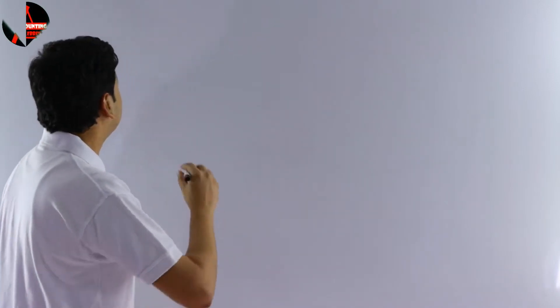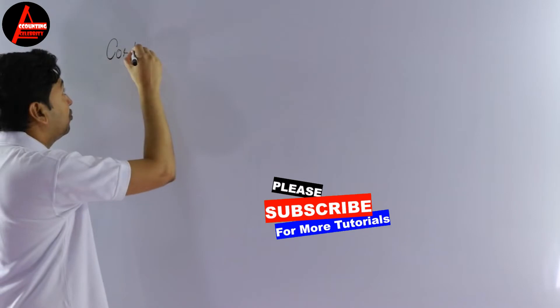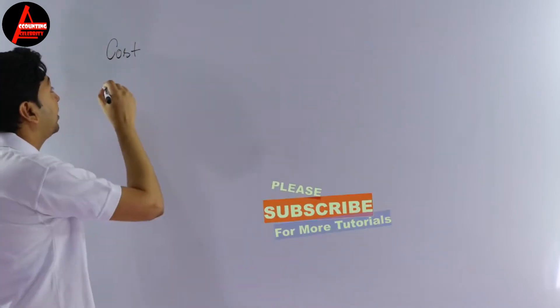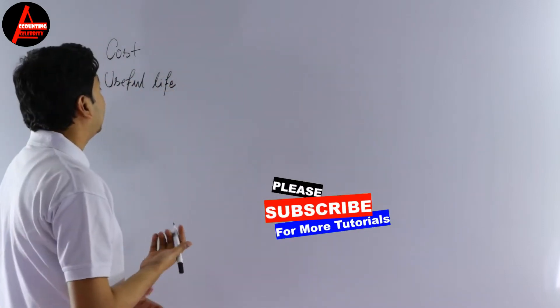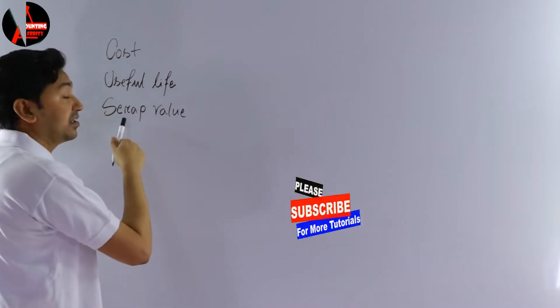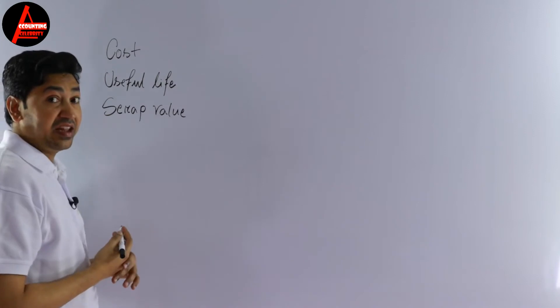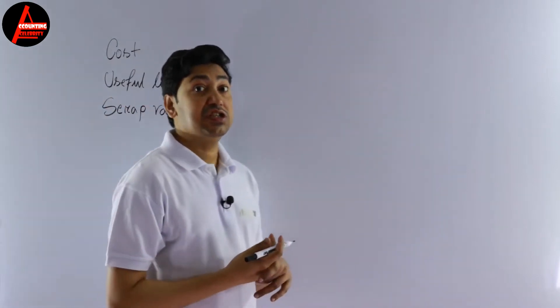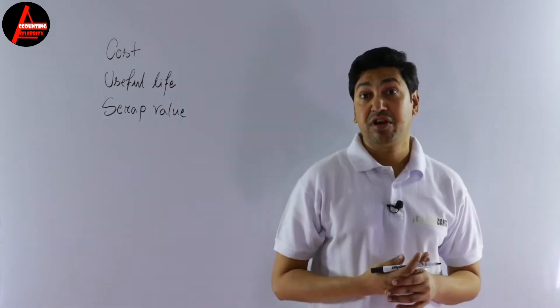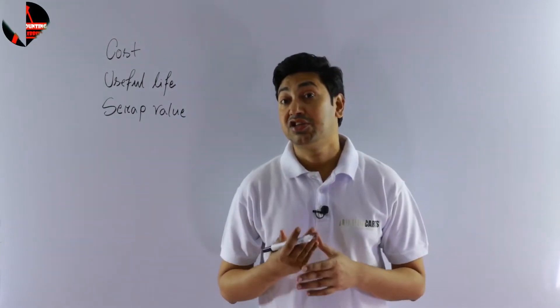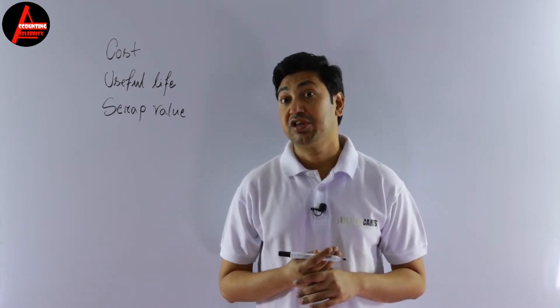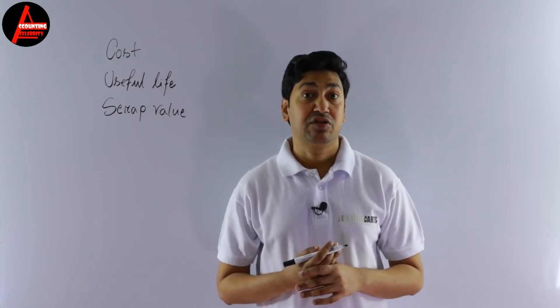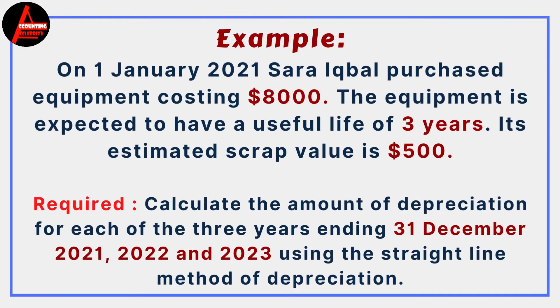It is calculated by simply dividing the cost of an asset less the scrap or salvage value by the expected working life of the asset. So what information do you need when you calculate the straight-line method of depreciation? You need the cost of the asset, the useful life of the asset, and the scrap value — also called salvage value, same thing. These three things will be given in the question, and from this information we calculate straight-line depreciation.